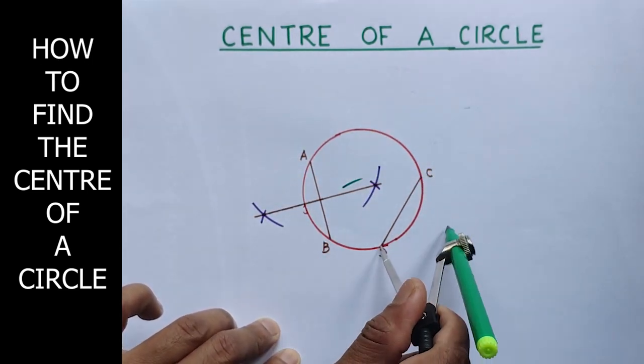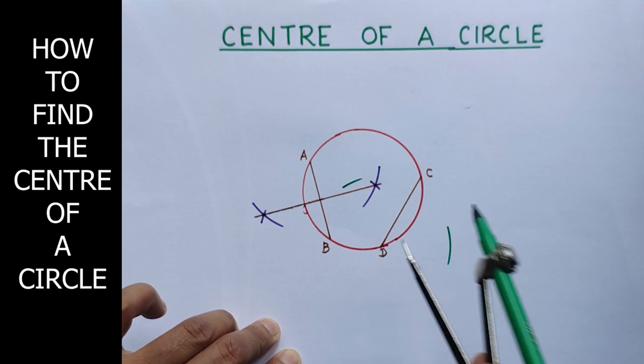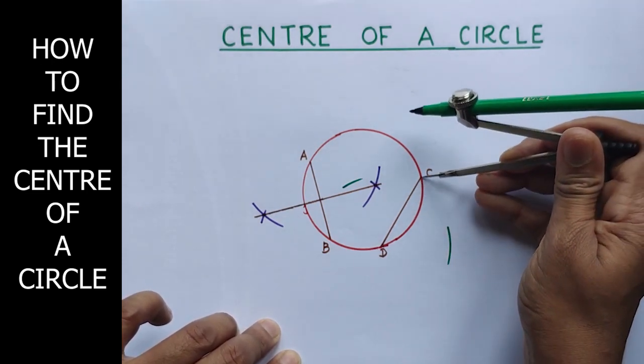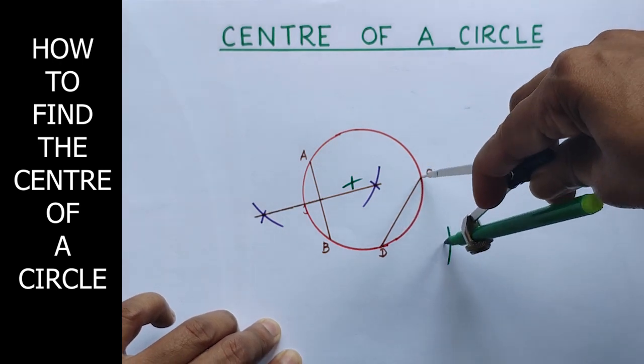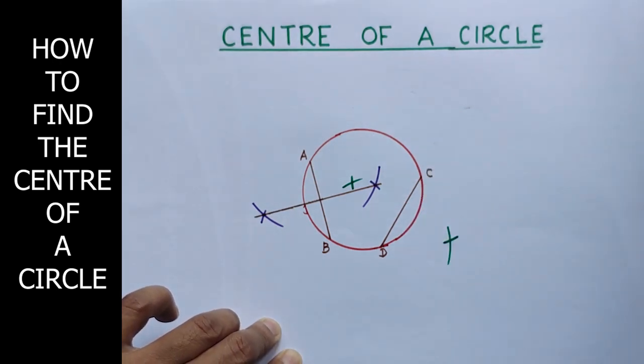Without changing the compass, place the metal tip at C. Draw arcs. We got the intersecting points. And join these two.